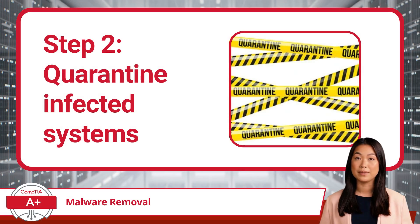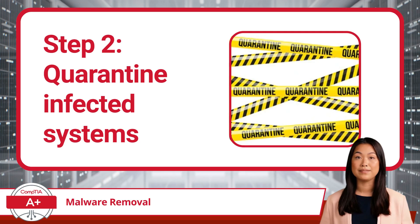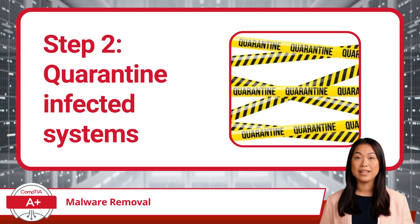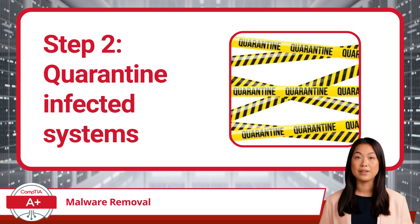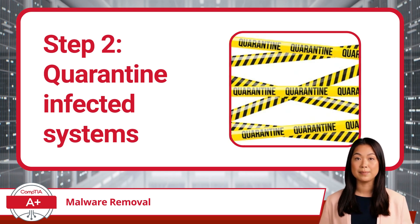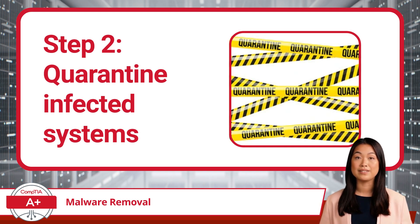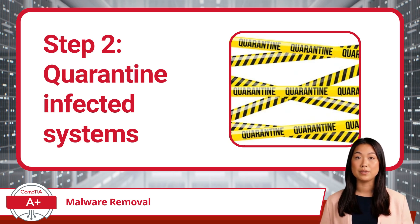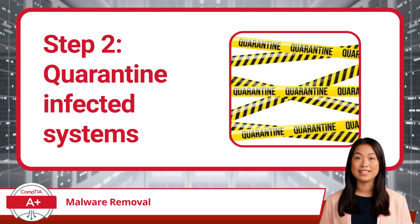Once you've verified malware is present, it's time to quarantine the infected system. This involves disconnecting the device from the network, whether Wi-Fi or Ethernet, to prevent the malware from reaching out to other systems or calling in reinforcements from the Internet. Think of it like putting the infected system in a bubble — no emails, no messages, just the device on its own while you prepare to clean up. If you are unable to quarantine the device, consider powering it off while it awaits remediation.